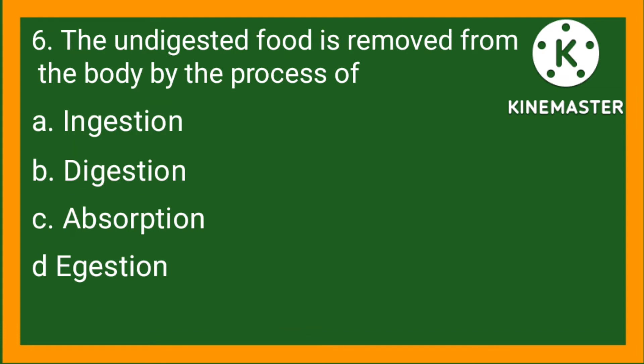Statement number 6. The undigested food is removed from the body by the process of: option A, ingestion; option B, digestion; option C, absorption; option D, egestion. So the right option is D.